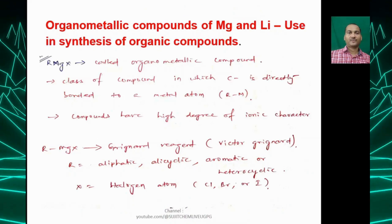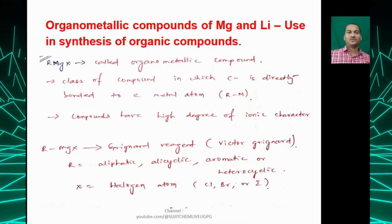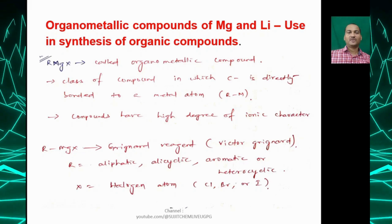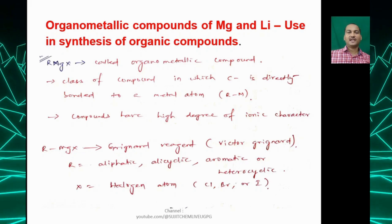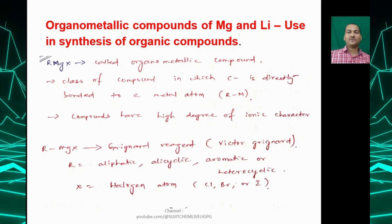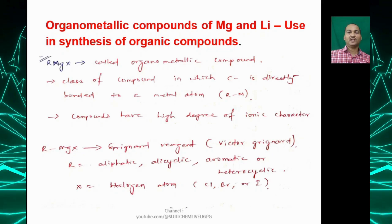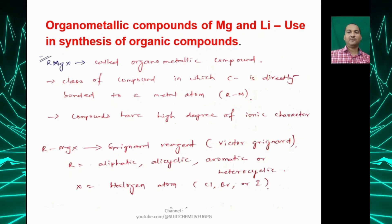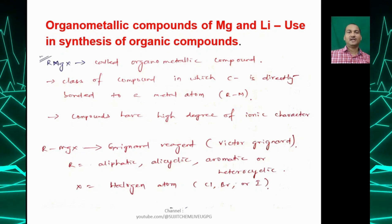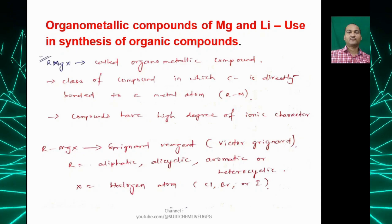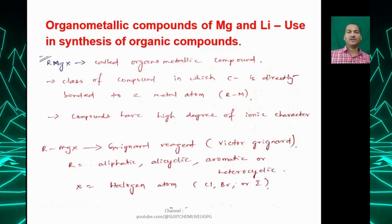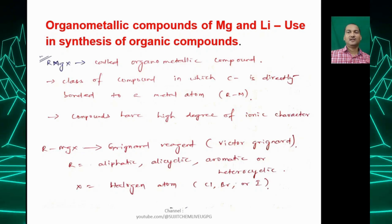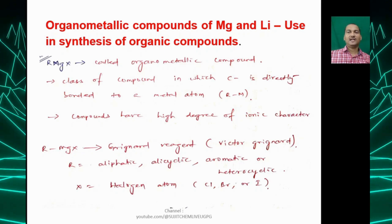First of all, we should know what is an organometallic compound. An organometallic compound is a class of compound in which the carbon is directly bonded to a metal atom — so that means you have a carbon-metal bond. General examples are RMgX, known as Grignard reagent, and RLi, alkyl lithium or organolithium compounds.